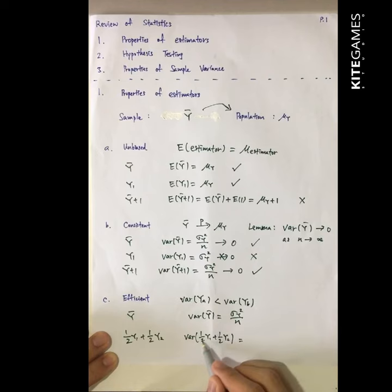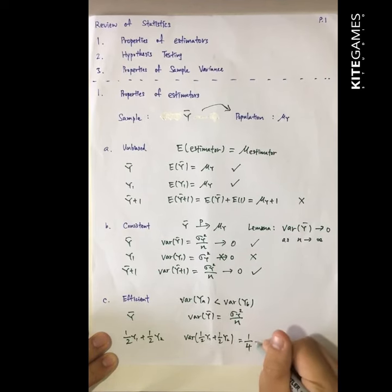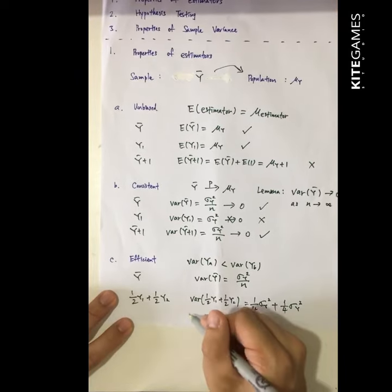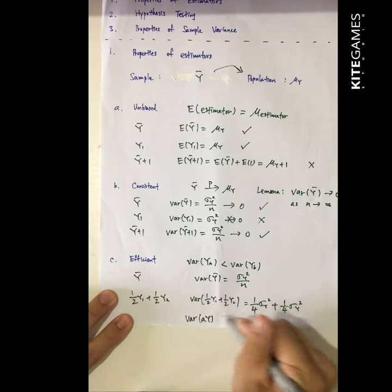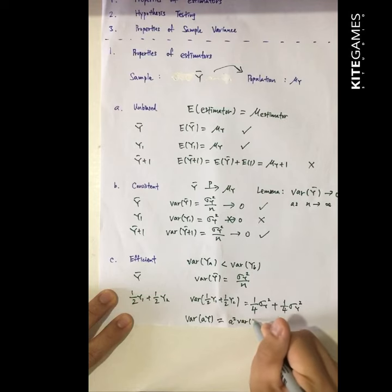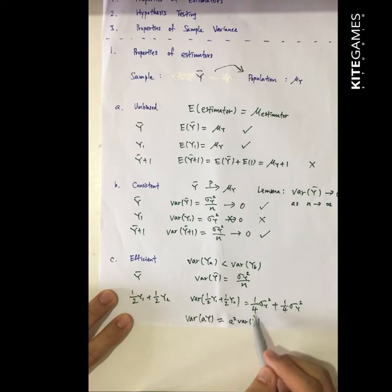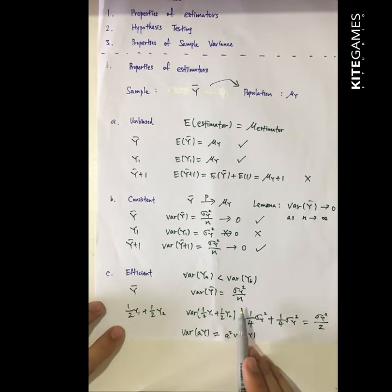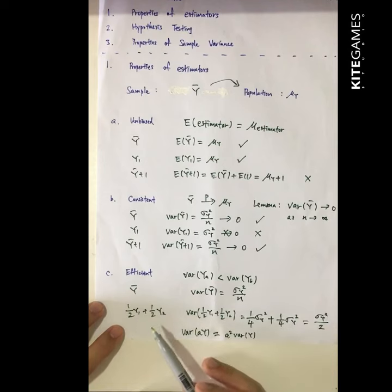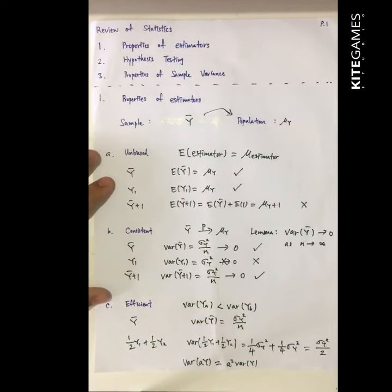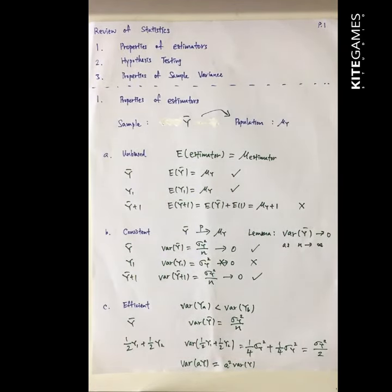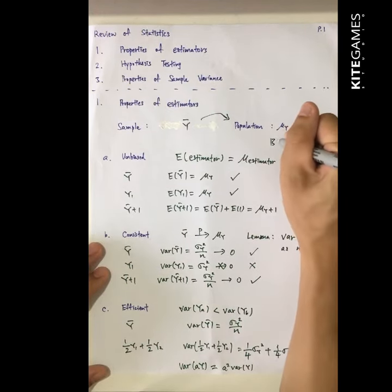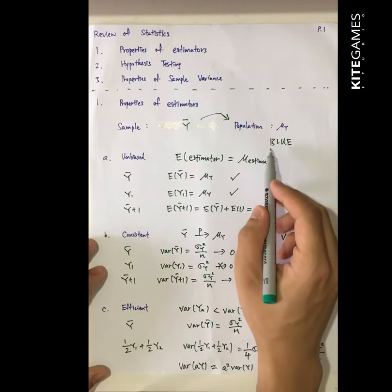For the second estimator, the variance equals one-fourth times the variance of Y1 plus one-fourth times the variance of Y — recalling that the variance of AY requires squaring A first. So this equals variance of Y divided by 2. If N is bigger than 2, then Y-bar is more efficient than one-half times Y1 plus one-half times Y2. These three properties — unbiasedness, consistency, and efficiency — define what makes a good estimator. If an estimator satisfies all three, we call it BLUE: the Best Linear Unbiased Estimator.